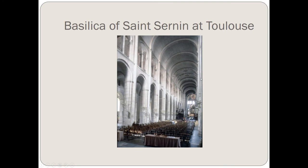This is an example of Romanesque architecture. You can see these heavy stone walls that could support the stone barrel arches that made up the roof. Having a stone roof instead of thatch or wood worked to prevent fires in these churches. You can see how large it is on the inside, designed to accommodate large numbers of pilgrims.